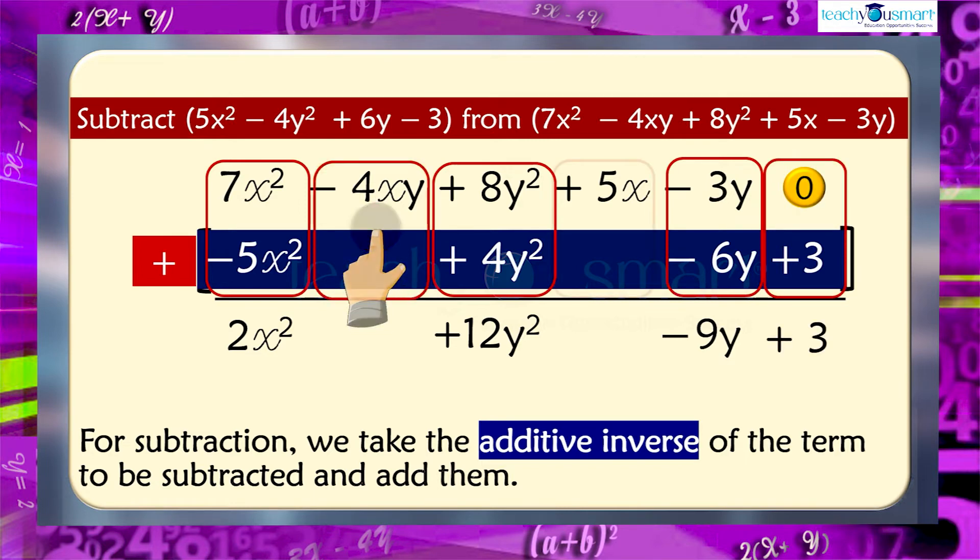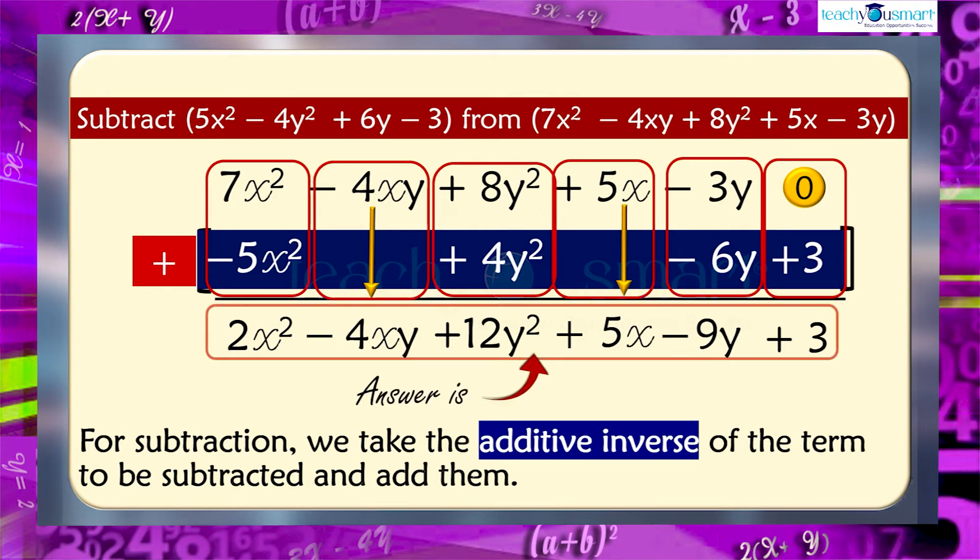Minus 4xy and 5x have no like terms in the second expression. So, they are carried over as they are. So, the answer is 2x square minus 4xy plus 12y square plus 5x minus 9y plus 3.